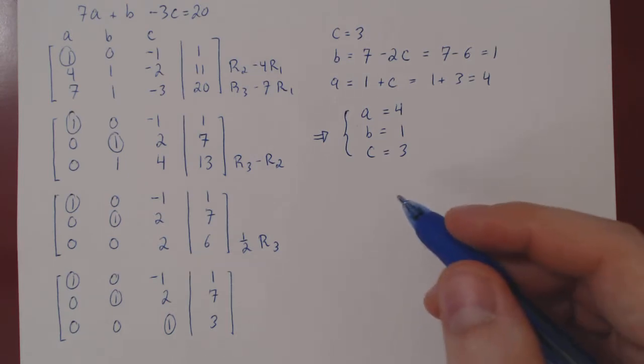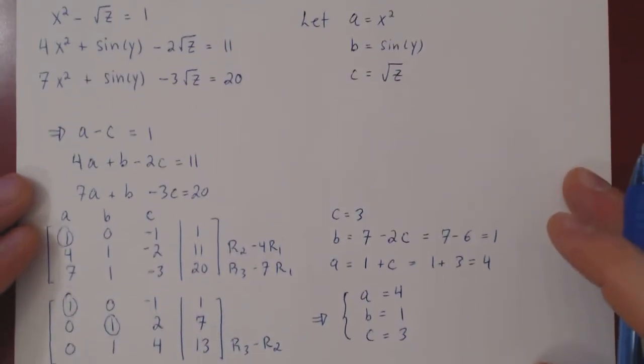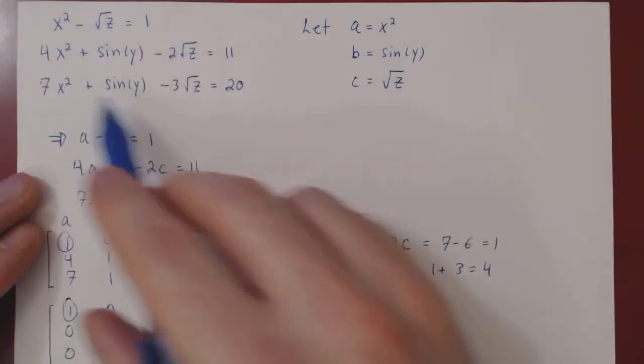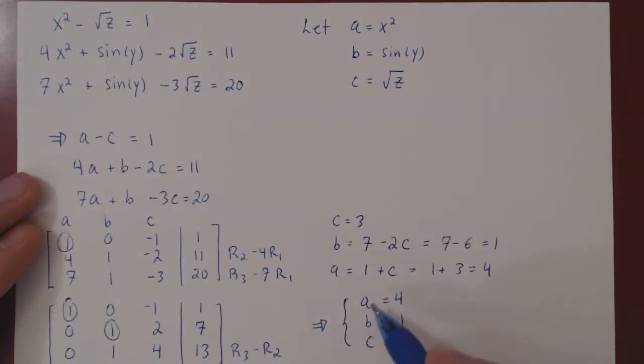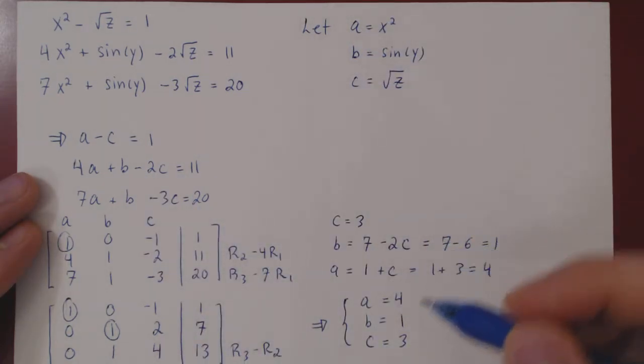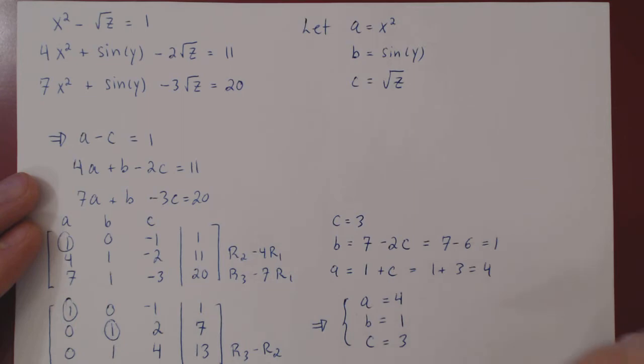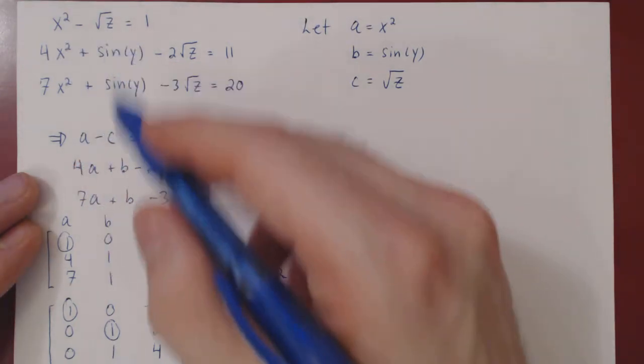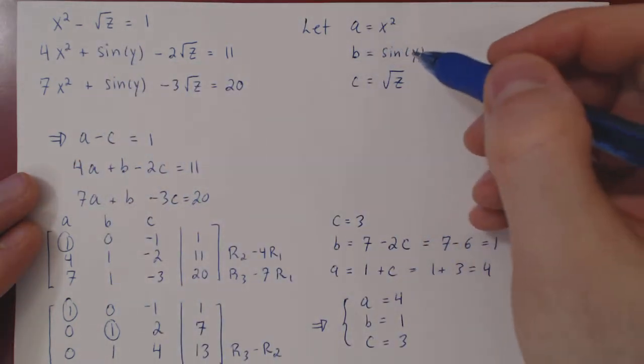But don't lose track of what the question was. We were trying to solve the original non-linear system. What we have now solved is the linear system that we obtained after making our change of variables. So we now have to find a way to solve back for the original variables, that is, for x, for y, and for z.